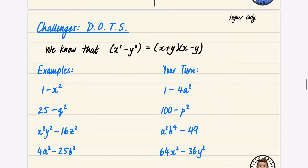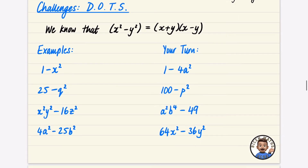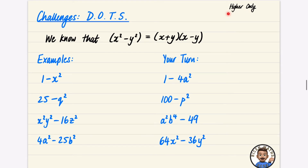Now continuing with the difference of two squares theme, we're going to do some trickier challenges — these are higher-level only, so foundation students don't need to look at this. The pattern still applies: square root the first term and square root the second term and place them in the brackets, then repeat with a negative. For example, square rooting gives 5 and q, so the brackets are (5+q)(5−q).